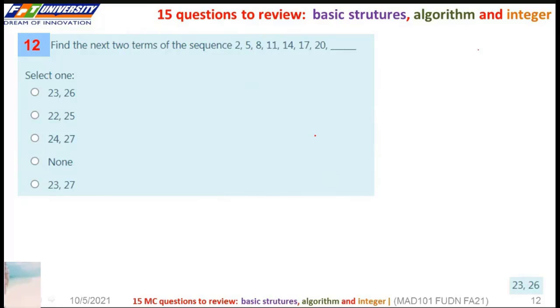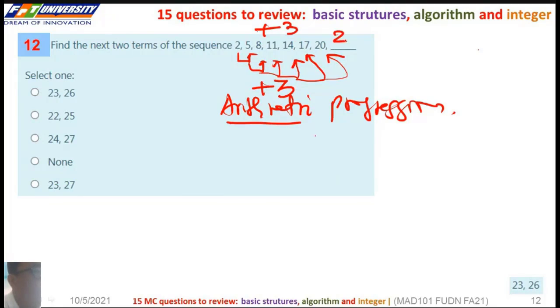Find the next 2 terms of the sequence. This is arithmetic progression plus 3. So this is 22 and 26. This is the correct answer.